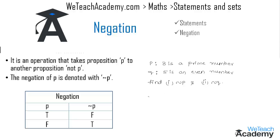Let us find not p. Not p can be formed just by writing 'not' before p. So we get not p as '3 is not a prime number', which is a false statement.